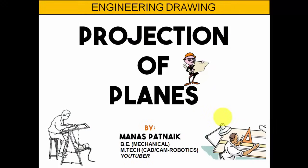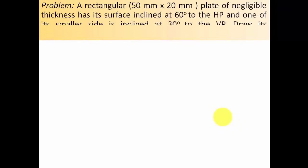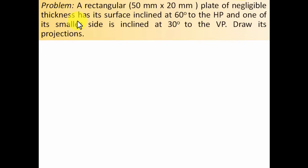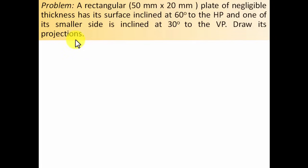Hi there, this is your friend and tutor Manas, and today we're going to be continuing with our discussion on projection of plates. A rectangular 50 mm by 20 mm plate of negligible thickness has its surface inclined at 60 degrees to the HP and one of its smaller sides is inclined at 30 degrees to the VP. Draw its projections.